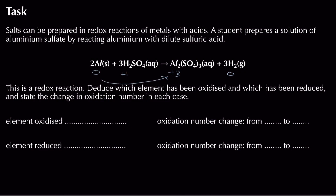Since aluminium goes from zero to plus three, it is oxidised. Since hydrogen goes from plus one to zero — the number getting more negative — hydrogen is reduced. We don't need to consider sulfate because it is unchanged going from left to right. So aluminium is oxidised (zero to plus three) and hydrogen is reduced (plus one to zero).